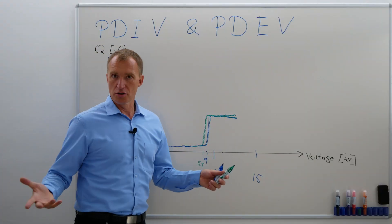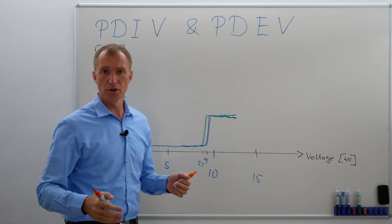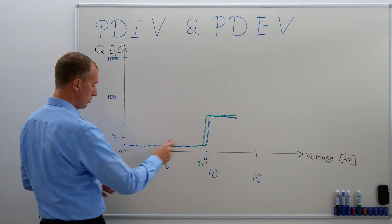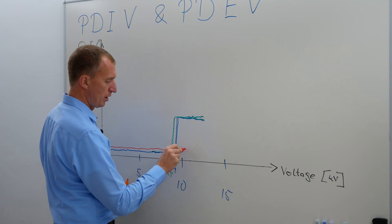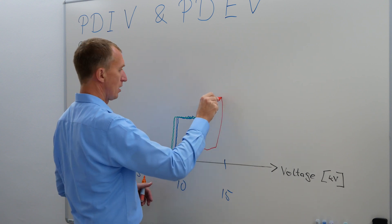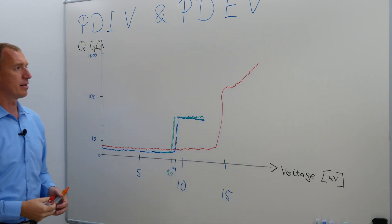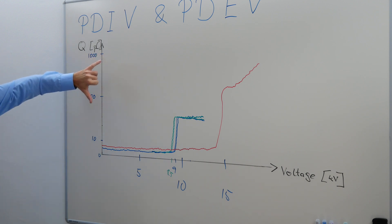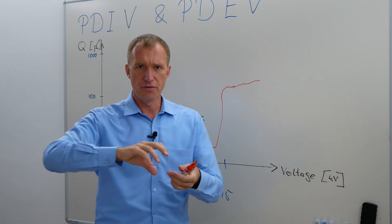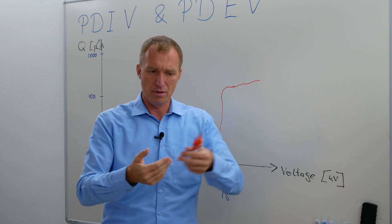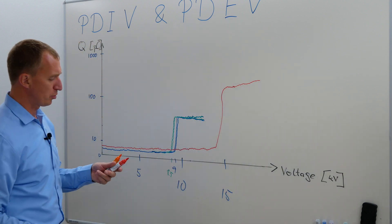Now let's consider a surface discharge — I'll use a different color. My background noise has changed a little bit. At a certain voltage, the surface discharge suddenly jumps up. If you keep increasing the voltage, the discharges usually increase as well. In logarithmic view, maybe not by a huge amount. The reason is that increasing the voltage makes discharges longer, involving more electrons — and more electrons means a bigger charge Q.